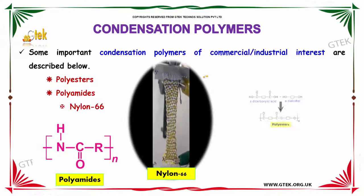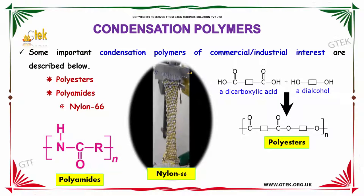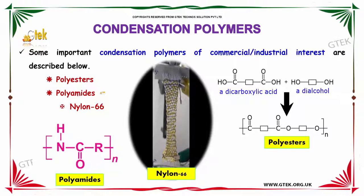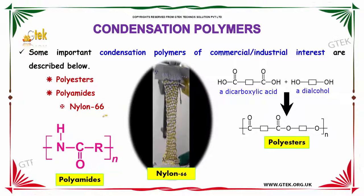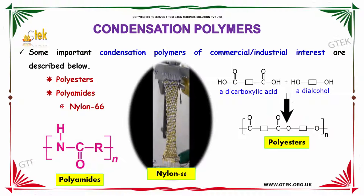Let us now discuss condensation polymers. Some important condensation polymers of commercial or industrial interest are described below. They are polyesters and polyamides. Under polyamides, we have Nylon 66. This is the general representation of N units of an amide — this is how Nylon 66 looks practically.